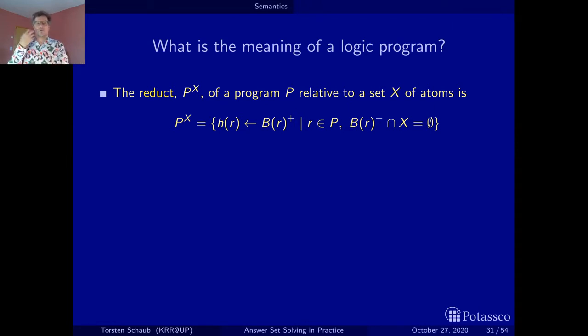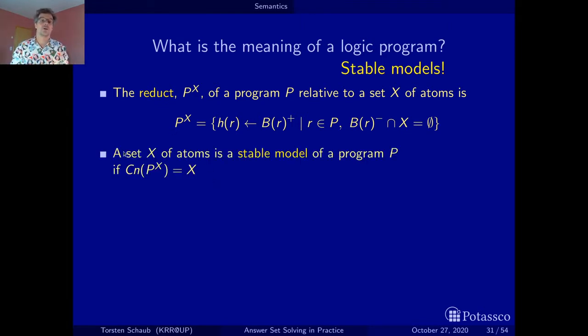Again, the idea is we have a set X. This is the candidate model or the candidate set of atoms that you give me or I give you. And then we take this set and our program, we reduce the program to the reduct. We compute the smallest model or the smallest set closed under this resulting positive program. And if this is what we guessed initially, what I provided you as a candidate or you provided me, then that's a stable model. And that's it. A stable model is nothing else than solutions of this condition.